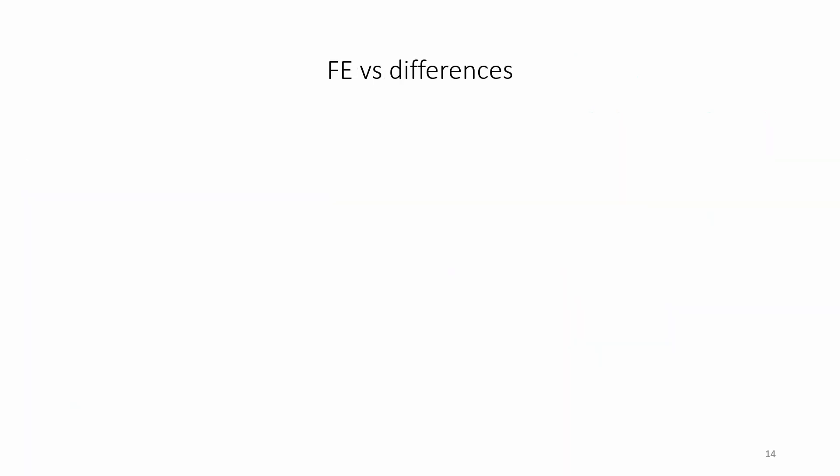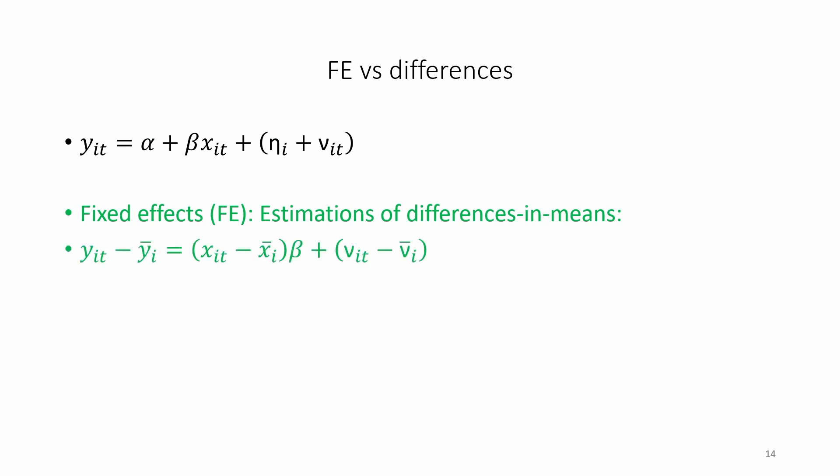Let's think a bit more about fixed effects regression versus taking differences. Here is our panel data regression model with a time invariant individual specific component, eta_i. Fixed effects regression corresponds to estimations of differences in means. And this process cancels out and removes the component eta_i.